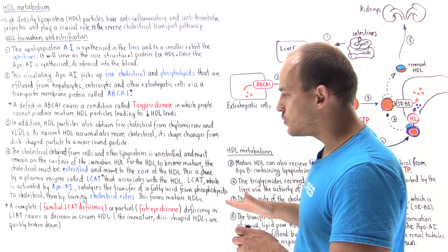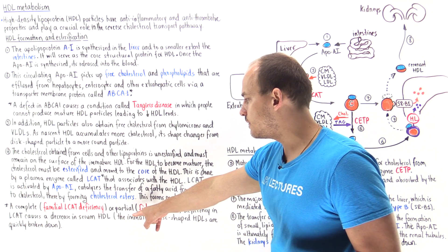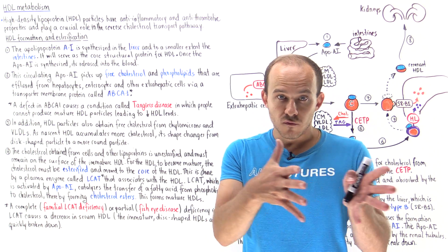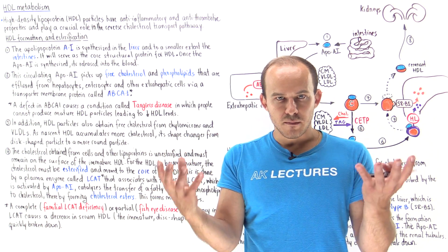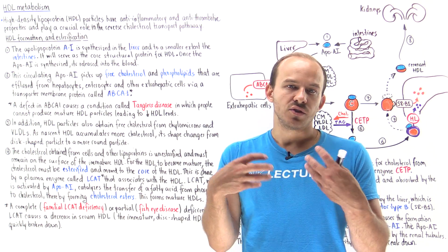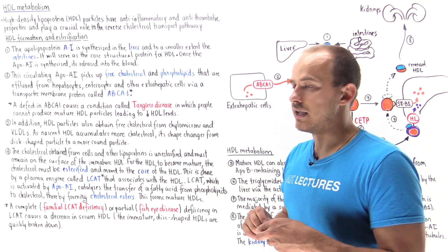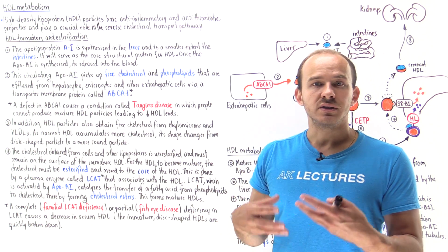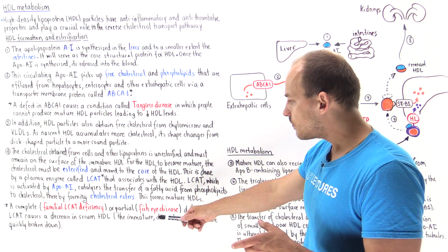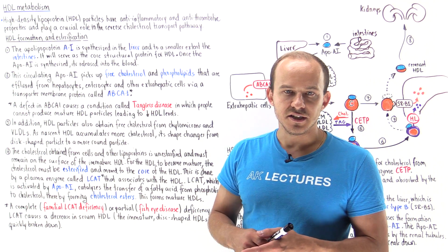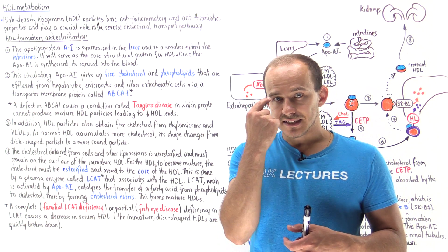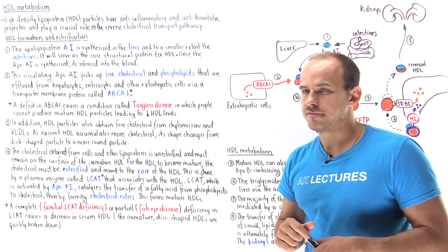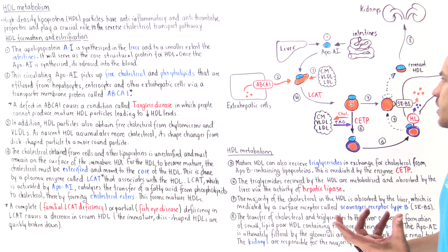If we have a complete or partial deficiency in LCAT, we won't be able to move cholesterol into the core, so the shape will remain relatively immature and disc-like, resulting in low HDL levels in the blood. Cholesterol will deposit in the cells. In fisheye disease — named because cholesterol deposits inside the cornea of the eyes, creating cloudy eyes — this is a relatively rare condition caused by LCAT deficiency.